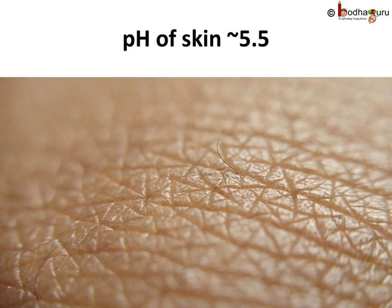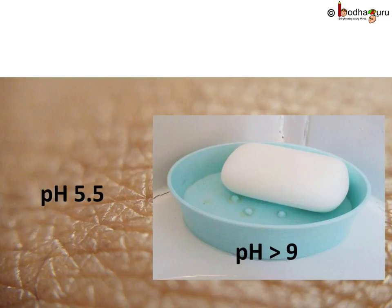The optimal pH of our skin is around 5.5. Use of regular soap too often increases pH, as regular soap is basic. When the pH of skin is high, the skin becomes drier and its defense against bacteria is weaker. So pH really matters in lots of things.